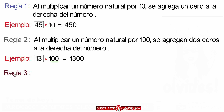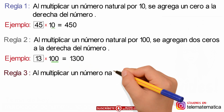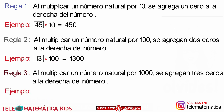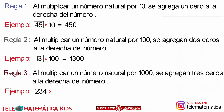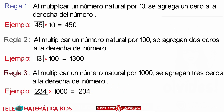Y regla número 3. Al multiplicar un número natural por 1000, se agregan tres ceros a la derecha del número. Veamos un ejemplo: 234 multiplicado por 1000. Y le agregamos los ceros del número 1000, cuyo resultado sería 234.000.